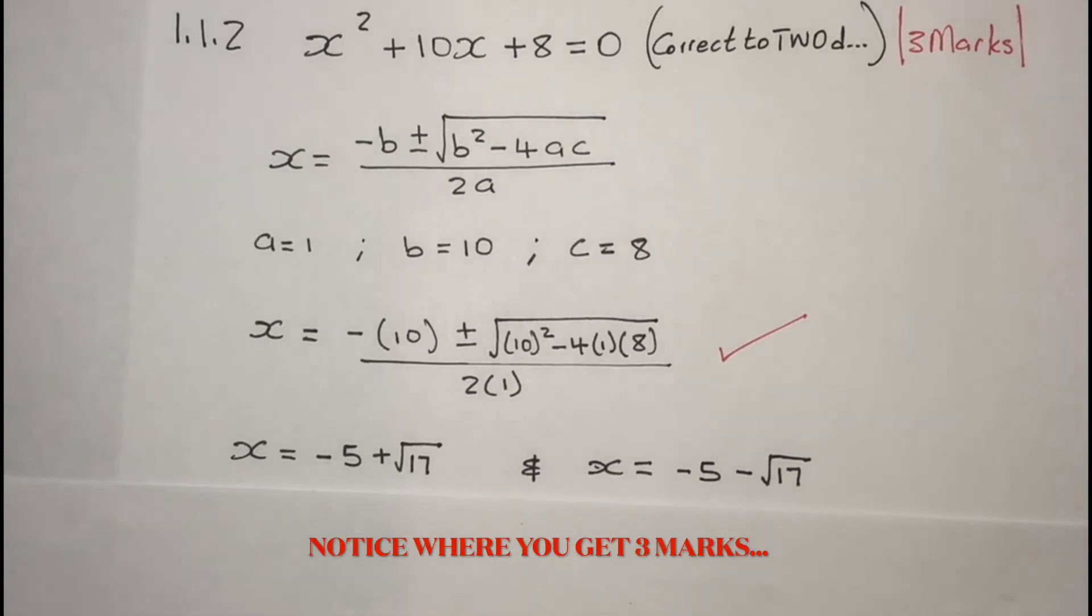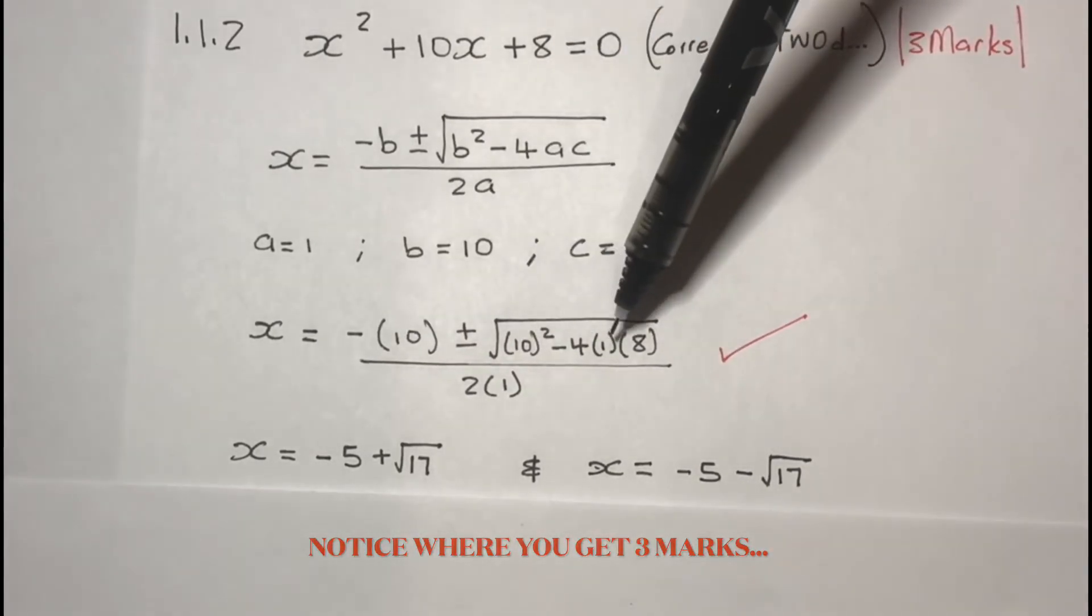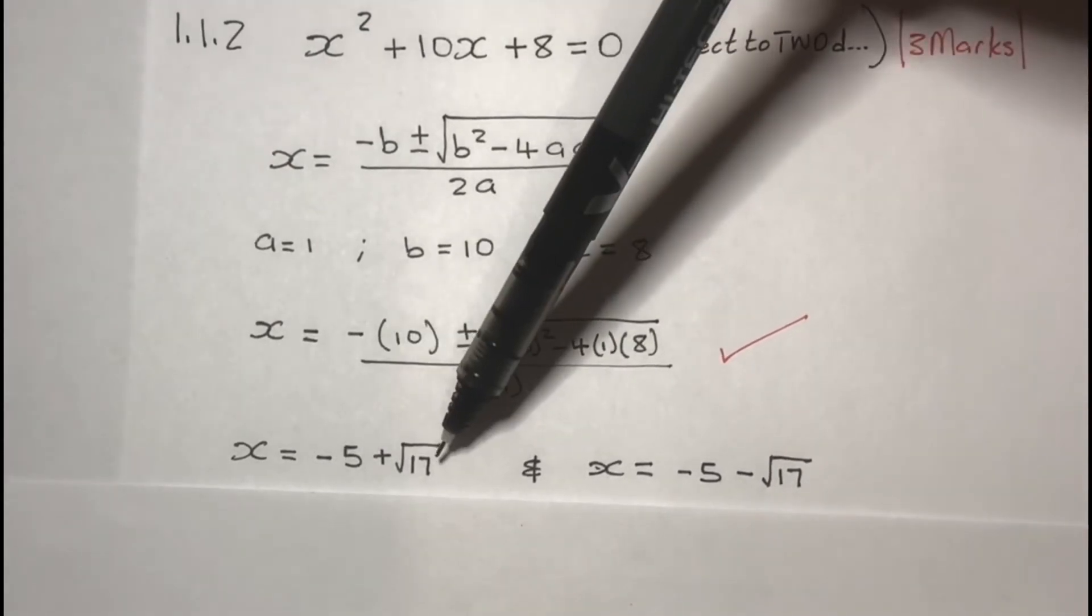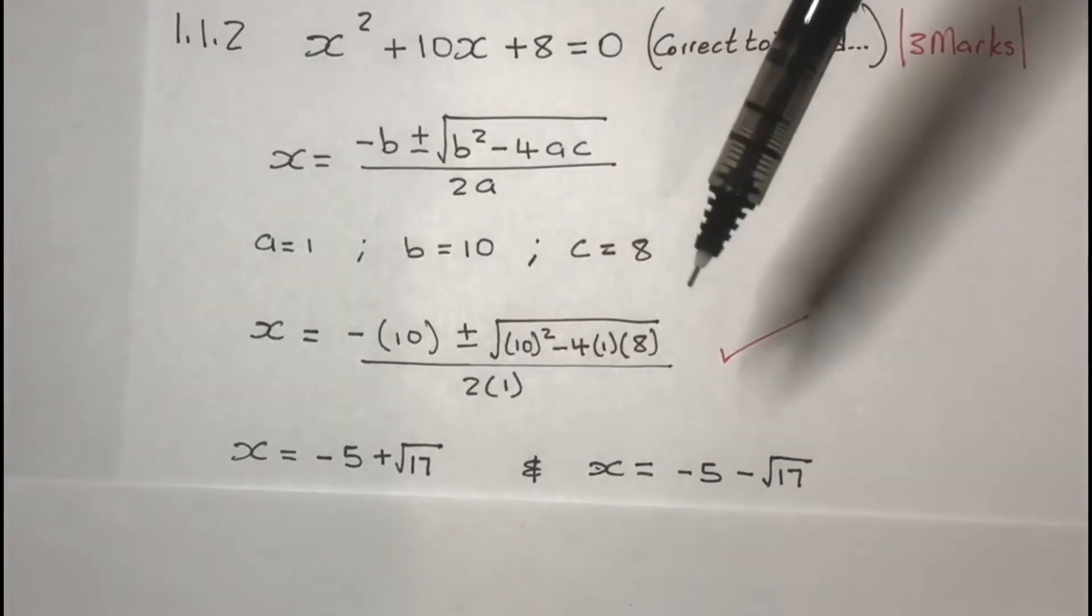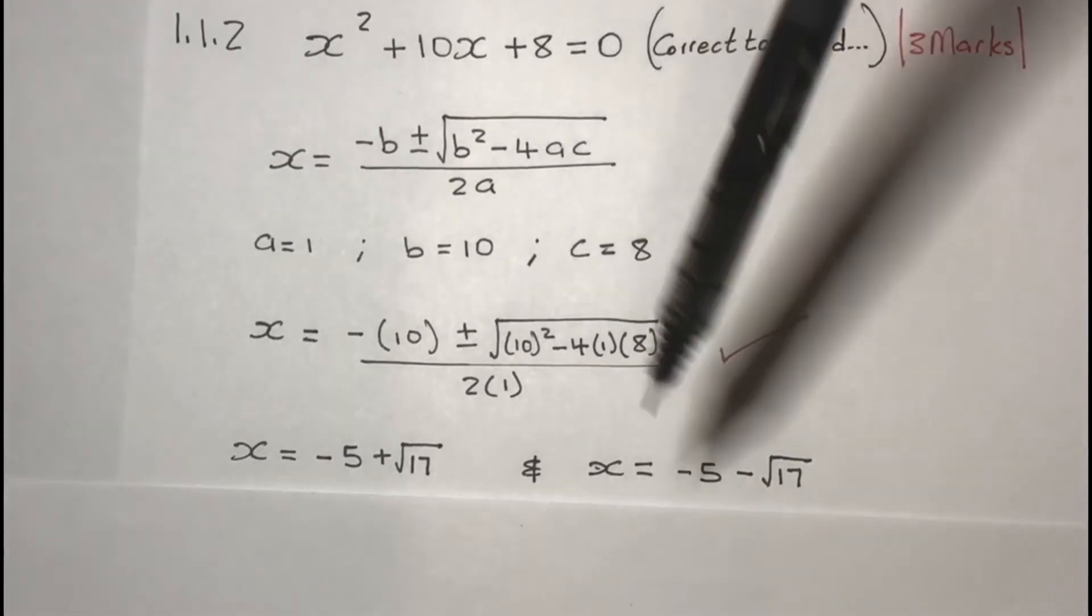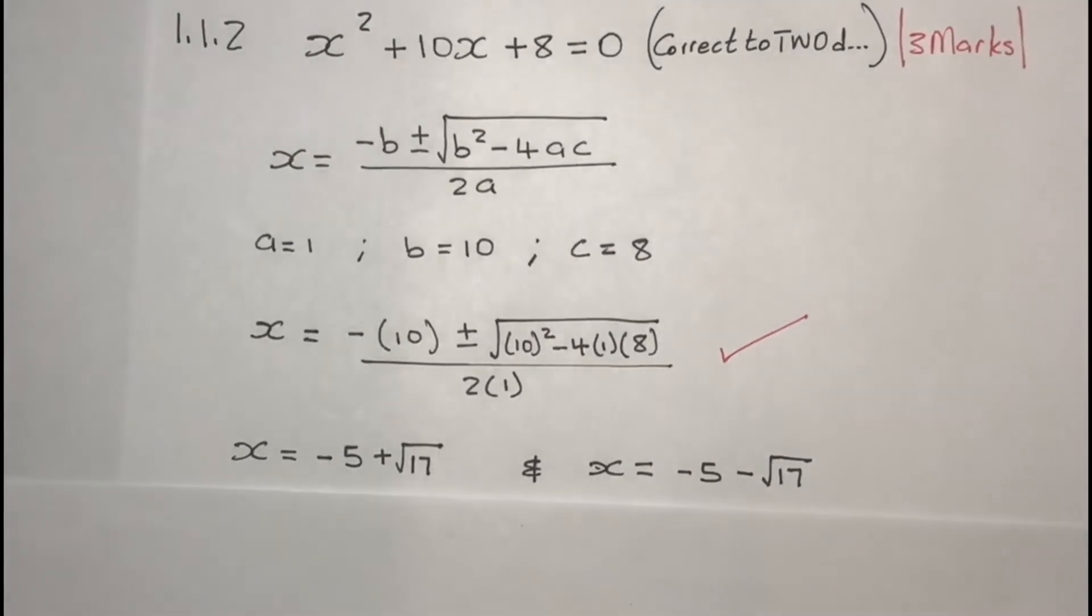Next step, you punch all of this on your calculator by first using a positive sign, and this is the value that you get on your calculator. And you punch it again but using a negative sign, and this is what you get on your calculator.